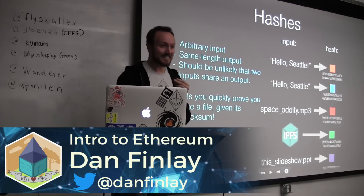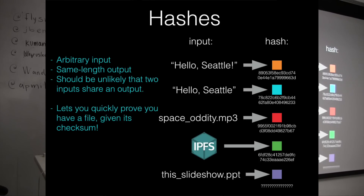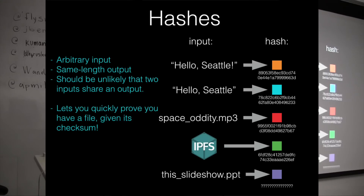The first thing I'm going to give you is hashes. We might as well call tonight Hash Fest because everything we're doing is built on these cryptographic hashes. A hash is just a function — you give it some data, and it gives you back some random data of a consistent length. You can see here I've got 'hello Seattle' and 'hello Seattle' with an exclamation mark, and they give you two totally different numbers. A small difference gives you a totally different output. It always gives you the same length output, and it should be very unlikely that two inputs ever give you the same output.